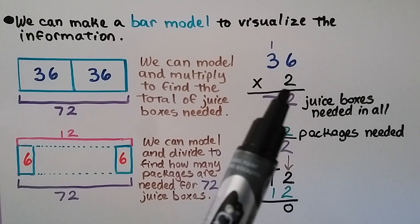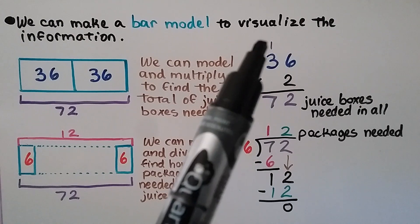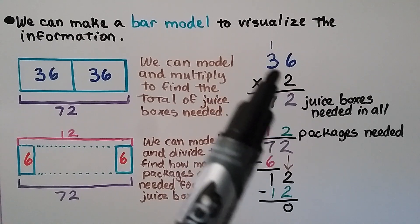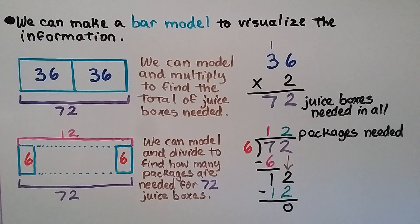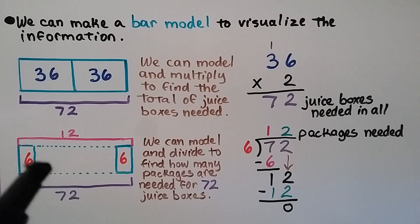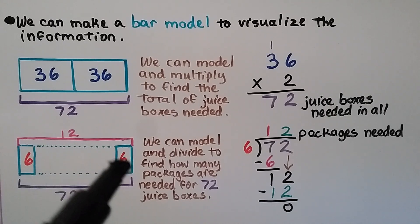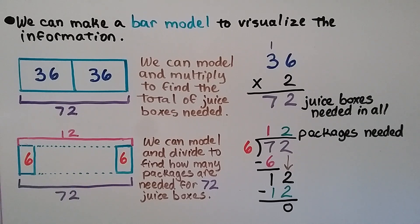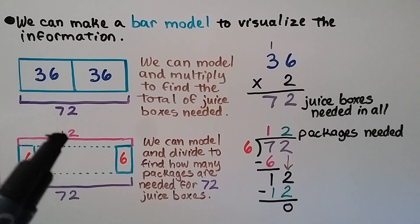36 times 2 is 72. We do 36 times 2. 2 times 6 is 12. We regroup the 1 and put the 2 down. 2 times 3 is 6, plus the 1 we regrouped is 7. So that's 72 juice boxes needed in all. And we can model and divide to find how many packages are needed for 72 juice boxes. We know there's 6 in a package. We can make a bar model and fill it with rectangles of 6 until we have 72. And we'll get 12 of them.